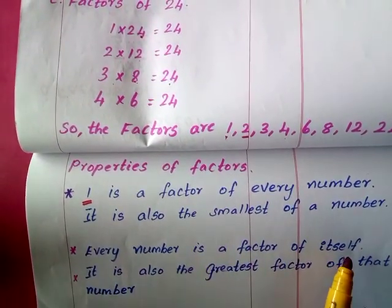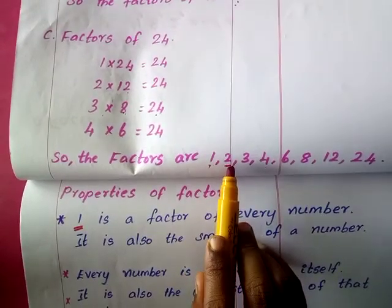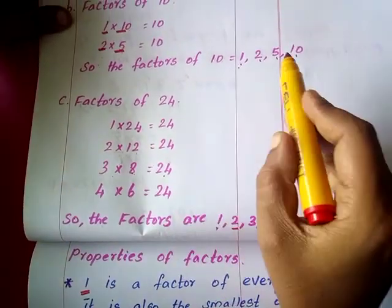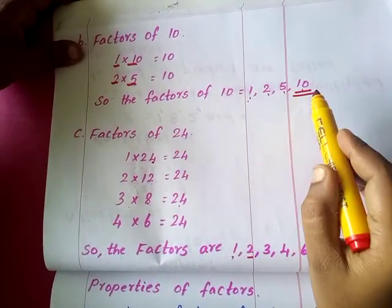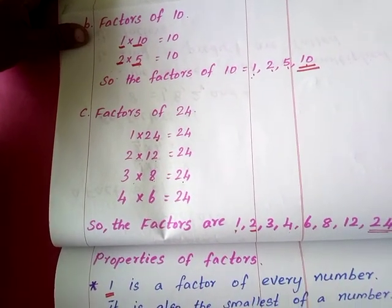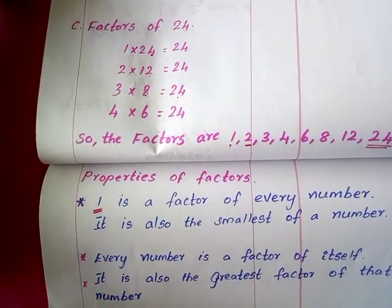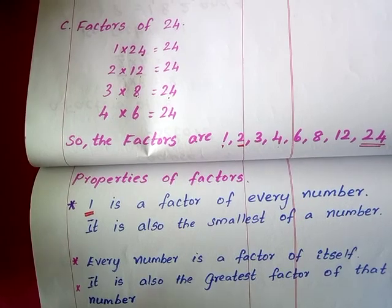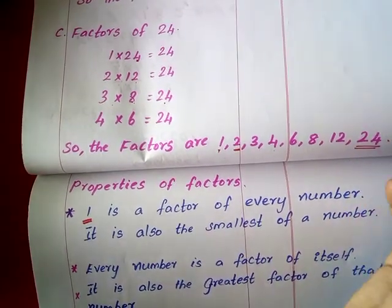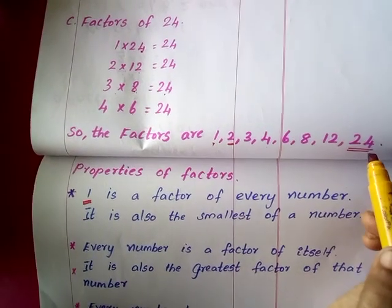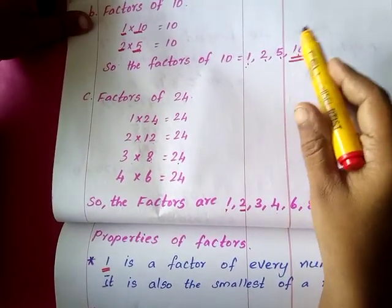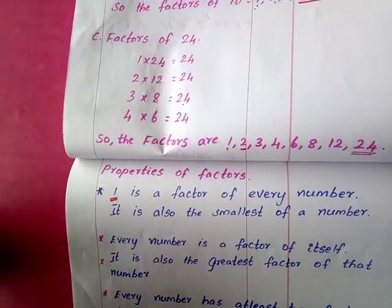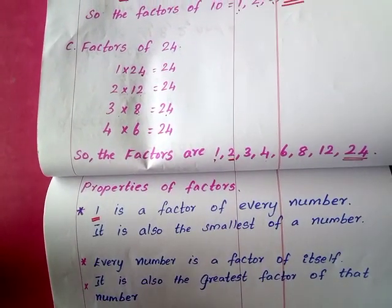Then every number is a factor of itself. Consider the factors of 24 — we can see 24 as a factor. Consider the factors of 10 — 10 is also a factor of 10. So if you consider any number, that number is also one of its own factors. And that will be the greatest factor of that number. For 24, there will be no factor bigger than 24, and for 10, there will be no factor bigger than 10.